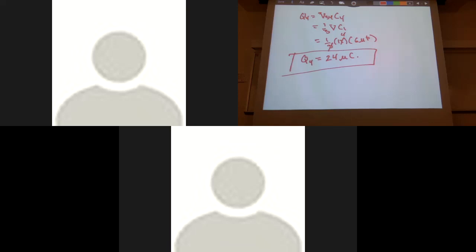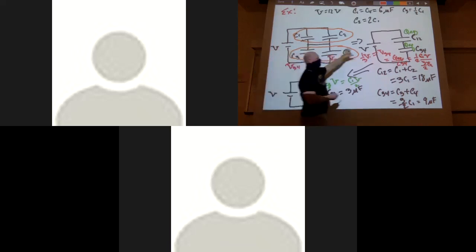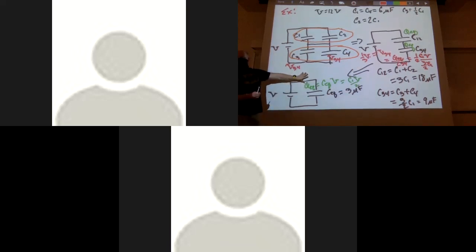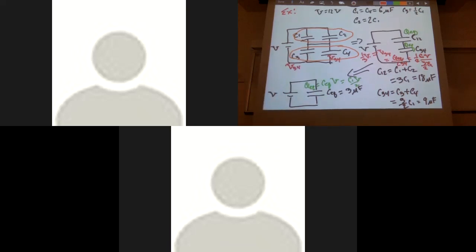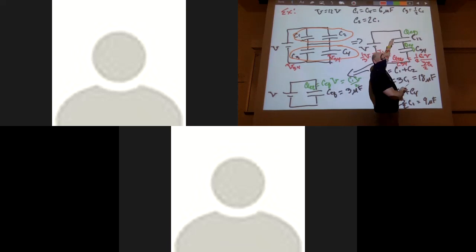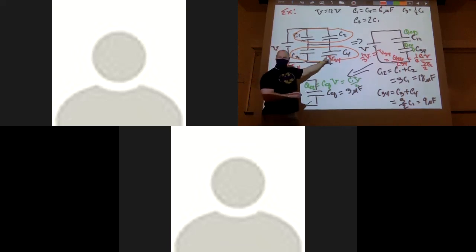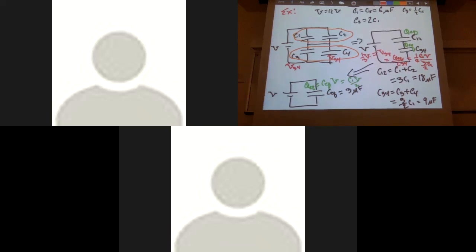Any problem like this will always be done the same way. Step one: identify what is in series and what is in parallel. Then start combining things, drawing pictures at each step. When you track backwards, you know what came from what — what's in series has the same charge, what's in parallel has the same potential. Find QEQ, go backwards, and systematically unravel to find each capacitor's charge and potential.